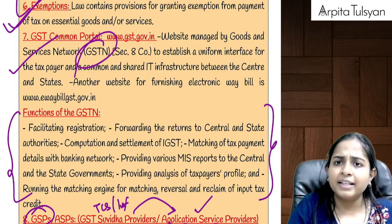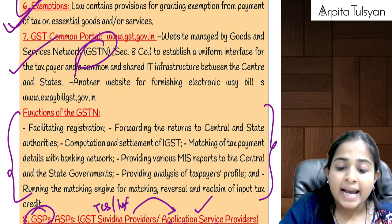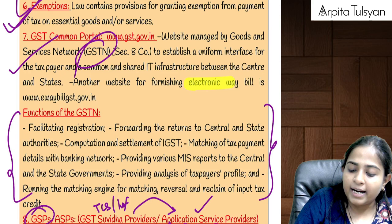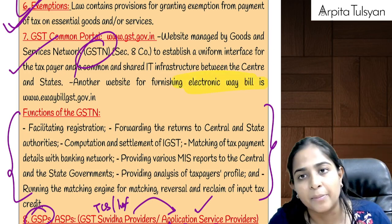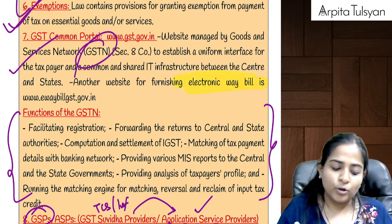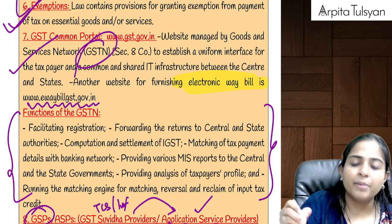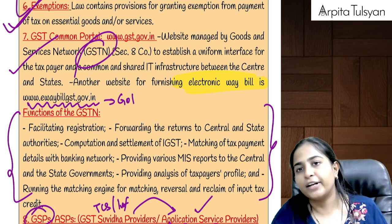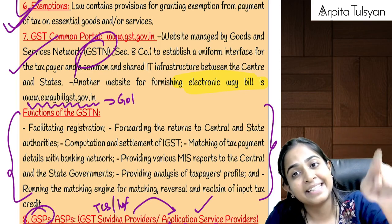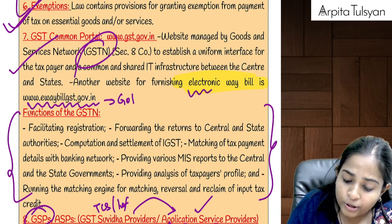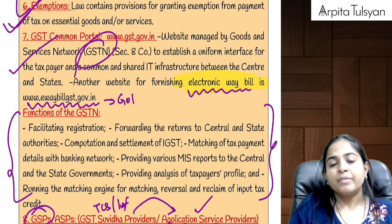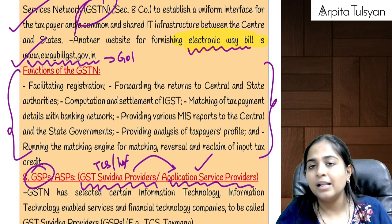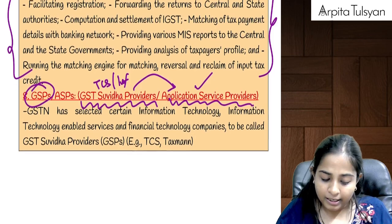The taxpayer's profile analysis will be shared with the central government and state government — whether a person is a regular taxpayer or a defaulter. Input tax credit calculations will also be done on this particular website. For everything, we use the GST Common Portal except for one small thing — making an e-waybill. For e-waybill, we use another website called ewaybill.gst.gov.in, which is maintained by the Government of India, not by GSTN. Only for this one purpose do we use this website; otherwise, we use gst.gov.in.